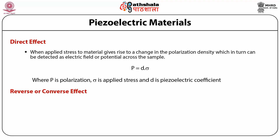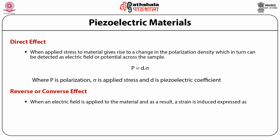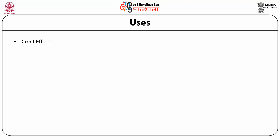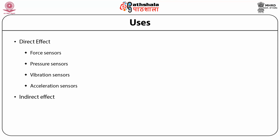In the reverse or converse piezoelectric effect, when an applied field is applied to the material, a strain is induced. It is expressed as ε = D·E, where ε is the strain induced, D is the piezoelectric coefficient, and E is the applied electric field. The direct piezoelectric effect is used as the basis for force, pressure, vibration, and acceleration sensors, while the converse effect is used as a basis for actuators and displacement devices.